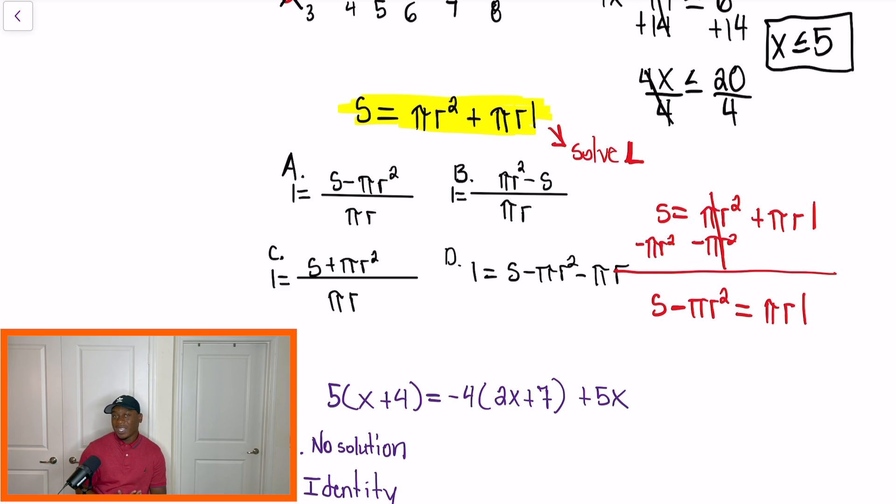And remember, we want to get L by itself. So in our last part of this problem, understand that pi R and L are all being multiplied together. So for us to get L by itself, we're going to do the opposite of that. So I'm going to divide by pi and R because that will leave L by itself. And once I do that, I will get a final answer of what I have boxed off. So L should be equal to S minus pi R squared divided by pi R, which will give us an answer choice of A.